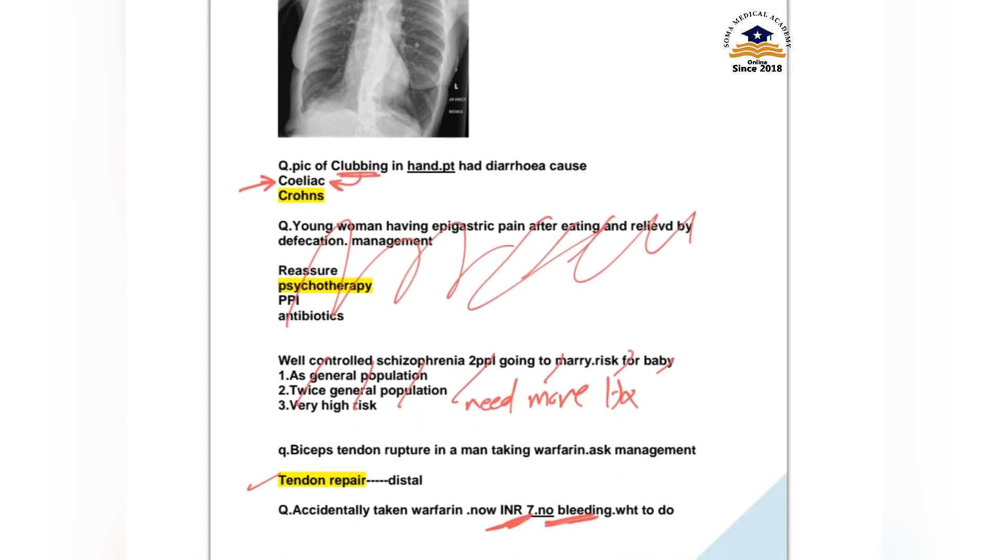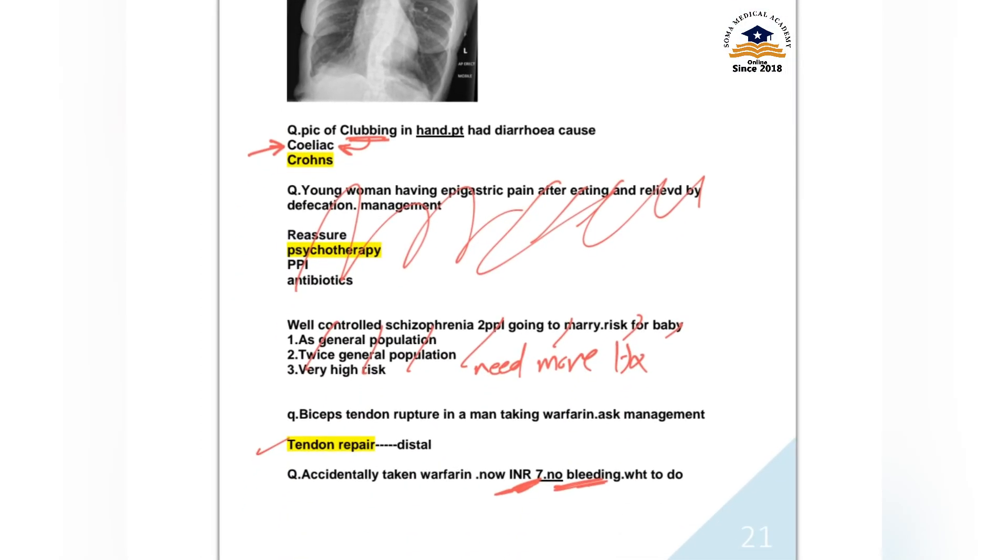A picture of clubbing hand and diarrhea. If you have chronic diarrhea and the clubbing picture, remember this occurred just in celiac disease in our study.